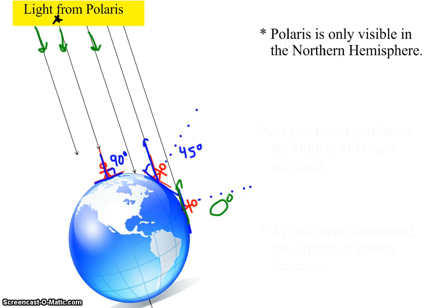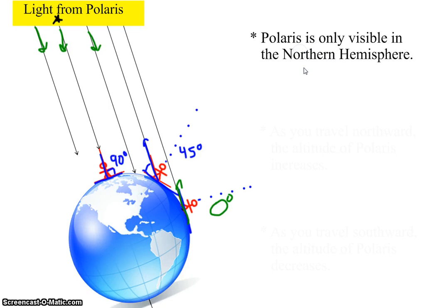Now, the thing we have to remember though is Polaris is only visible in the northern hemisphere. You can only see it if you're above the equator, north of the equator. So this is not going to work if you were in Australia or South America.